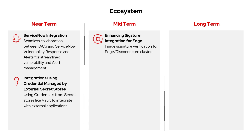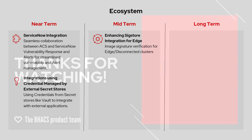In the midterm, ACS integrates with Red Hat Trusted Artifact Signer for keyless signature verification, supporting secure, trusted software supply chain workflows. In the future, we plan to extend this support to edge and disconnected clusters, where mirror registries are used.